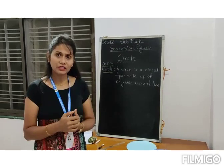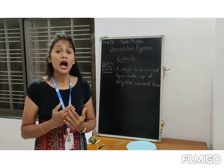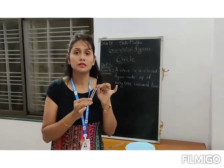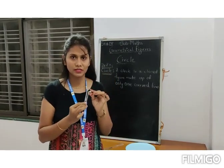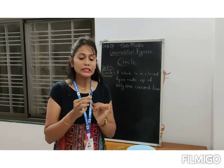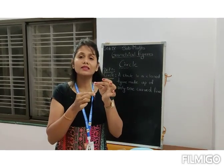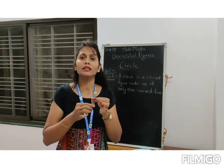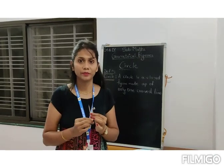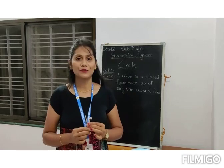There are many different ways to draw a circle. Today we are going to learn how we can draw a circle with the help of this compass. We also call it a rounder, but the mathematical word is compass. This is the metal arm and this one is the pencil arm. I will show you in the next video how to draw a circle with this compass. For right now, we will understand the different parts of a circle.